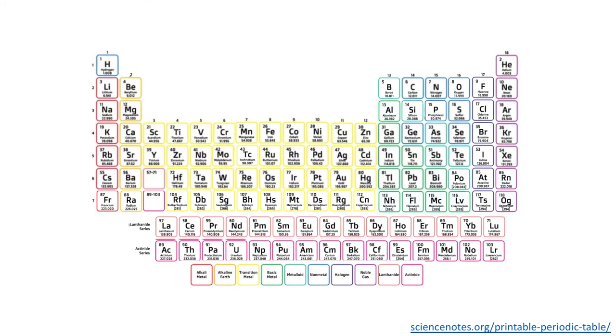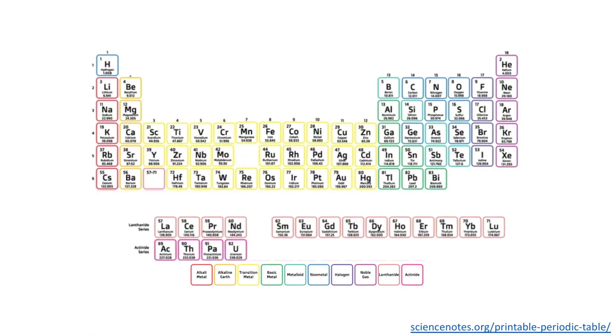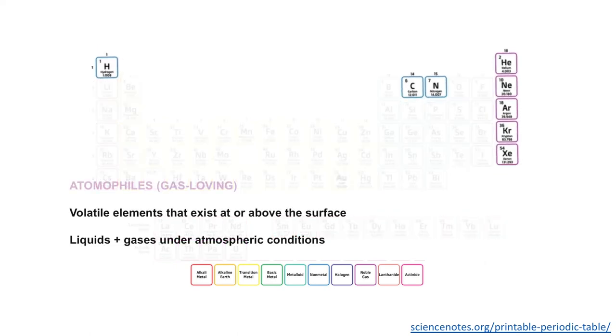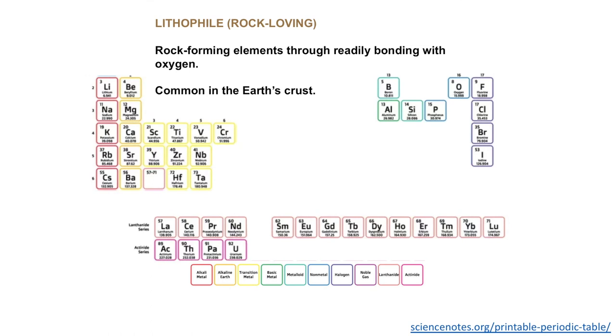Now we're going to look a little bit at Goldschmidt's classification. Goldschmidt's classification essentially refers to four different groups of elements according to their behavior in geological systems. Firstly we have the atmophiles, which are gas loving elements. These are essentially volatile elements that exist either at or above Earth's surface. These elements are often either liquid or gas under typical atmospheric conditions. Then we have what's known as the lithophiles, rock loving or rock forming elements. These are known as rock forming elements through readily bonding with oxygen. These elements are typically those that make up Earth's crust as we know it today, silica being perhaps one of the most abundant as well as aluminum.